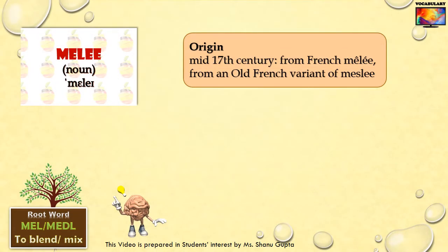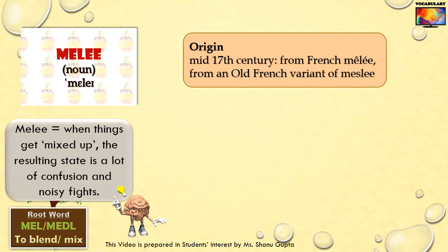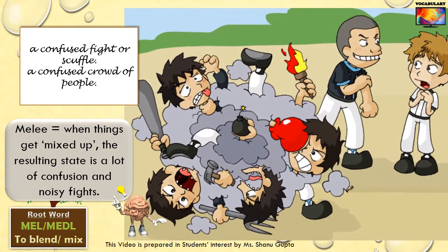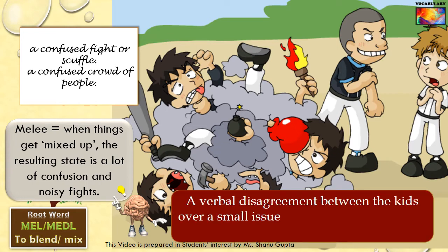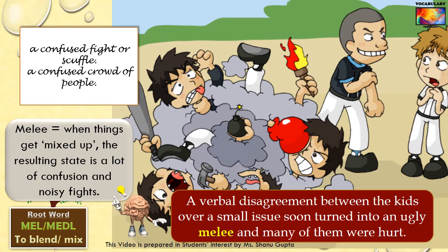Melee is another common word derived from the root meddle. When things get mixed up, the resulting state is a lot of confusion where people get worked up and this results in noisy fights. Melee means a confused and noisy fight or scuffle where people end up fighting hand to hand. Example: A verbal disagreement between the kids over a small issue soon turned into an ugly melee and many of them were hurt. The word melee might also refer to a confused crowd of people.